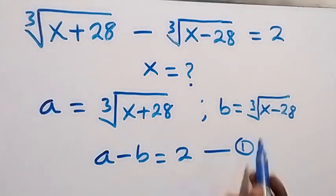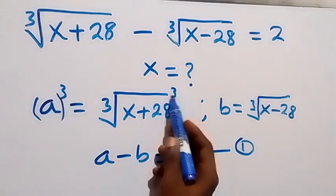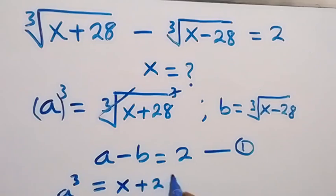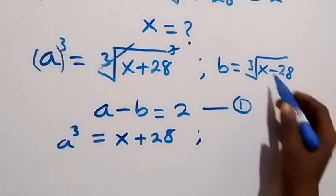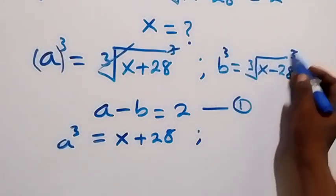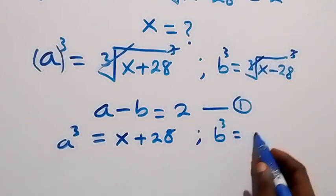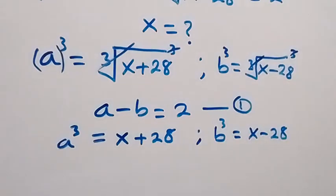Let's get rid of the cube root by taking the cube on both sides. The cube will cancel the cube root, so we get a³ equals x plus 28. Similarly on the other side, b³ equals x minus 28.